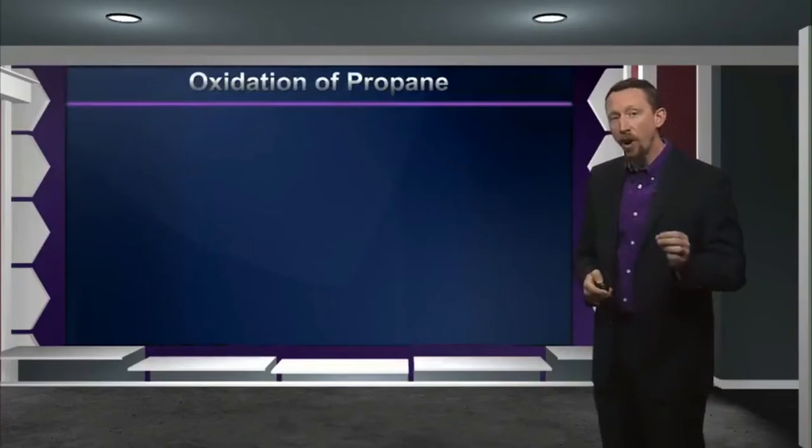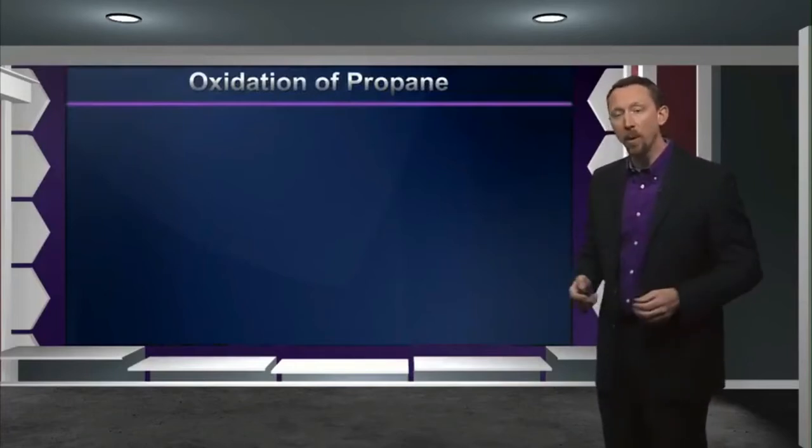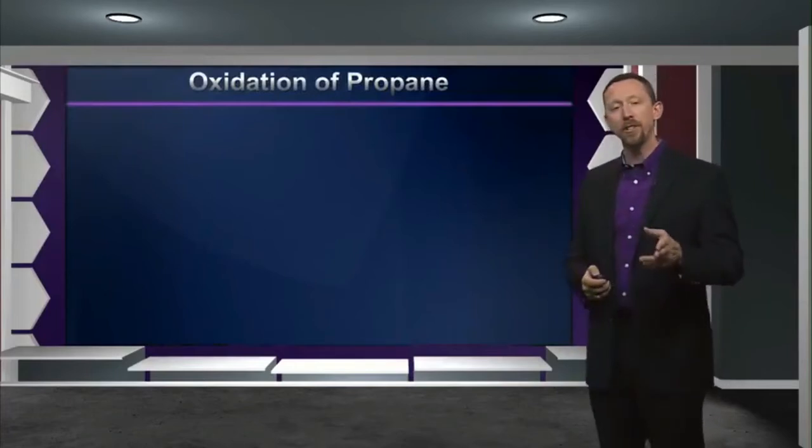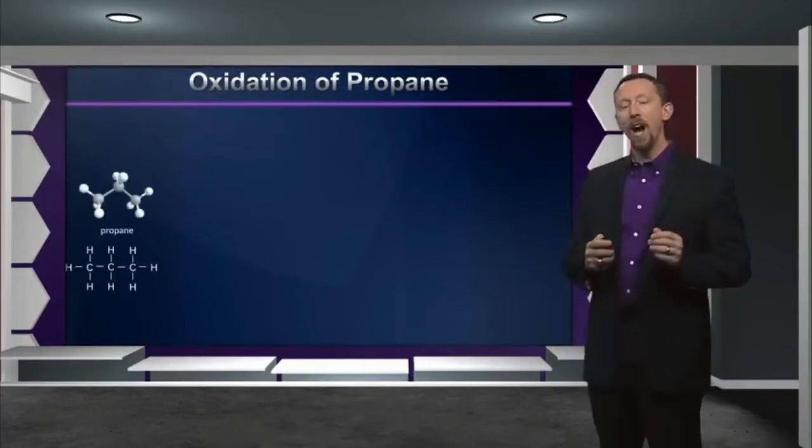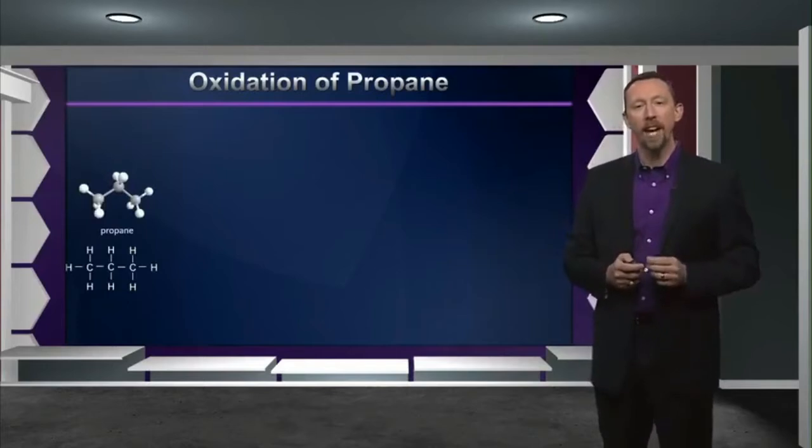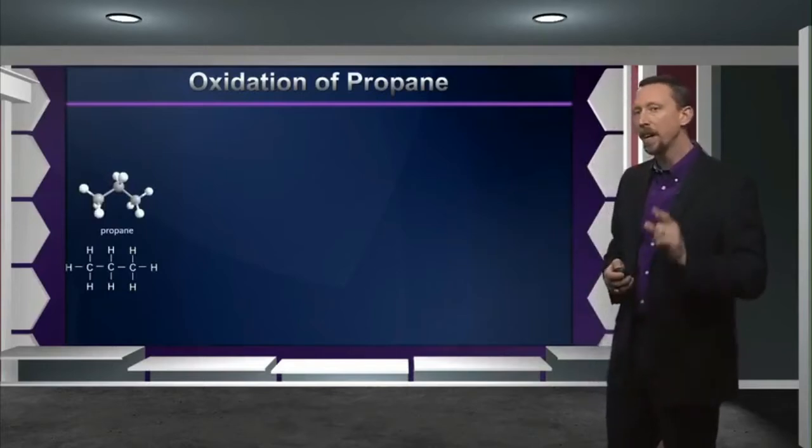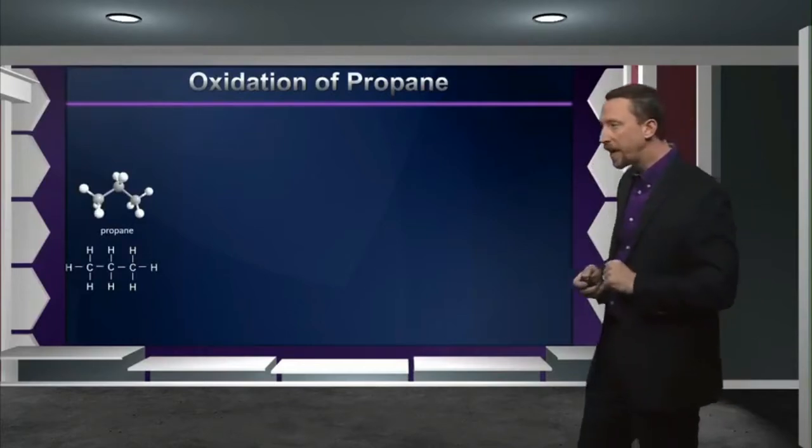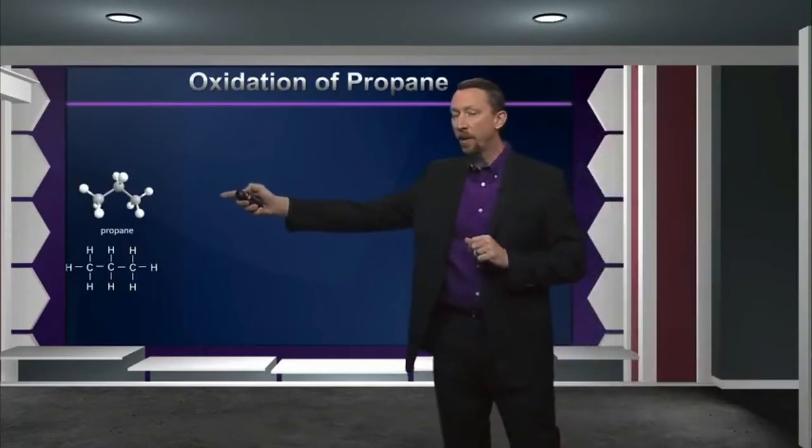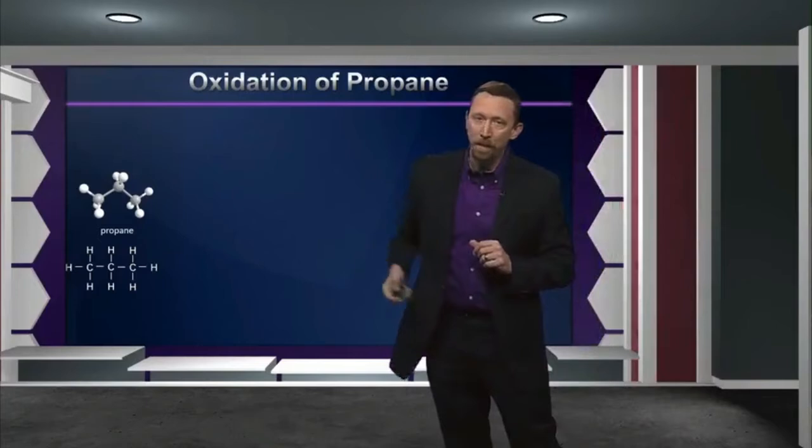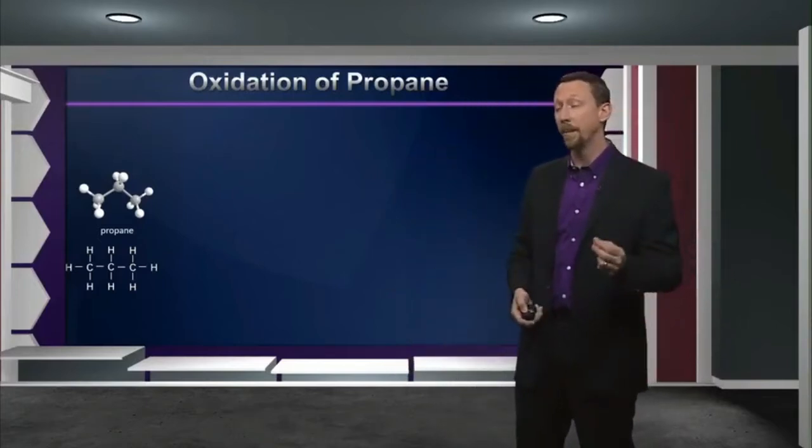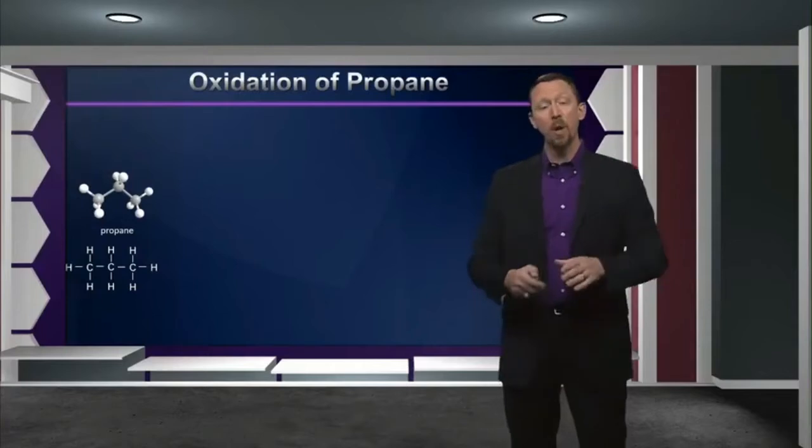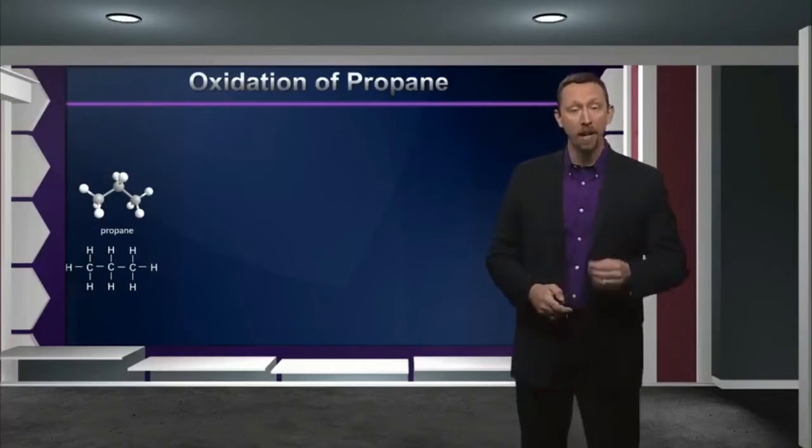But as we add additional carbon atoms to our molecules, things become even more complicated. And we can illustrate this by adding just one more carbon to the equation. Let's consider propane. When we oxidize a molecule of propane, we have to ask a new question: which one of the carbons gets oxidized? Because all the carbons are not created equally here. Notice that there is a terminal carbon, but there's also a carbon there in the middle that's bonded to two other carbons and therefore is in a distinct chemical environment.